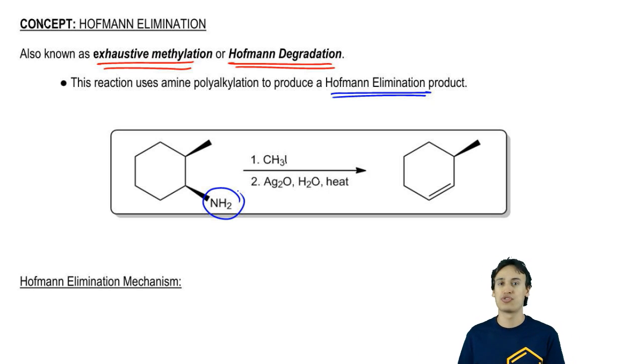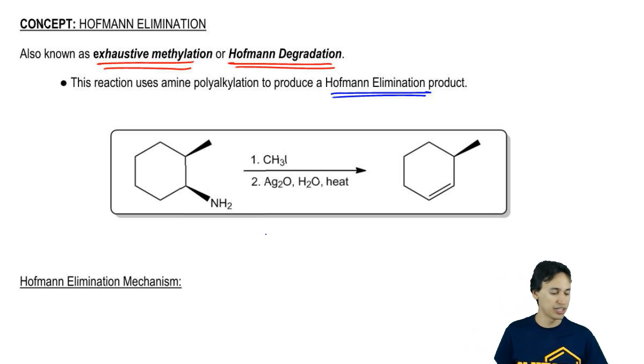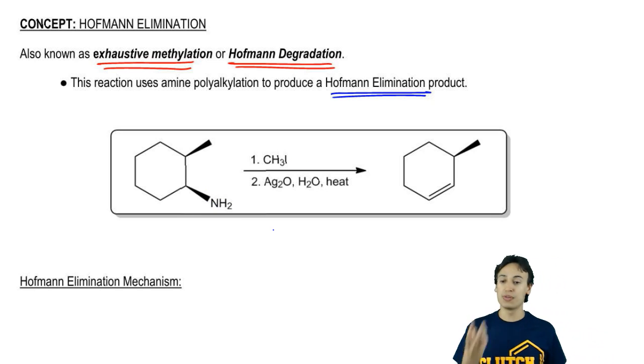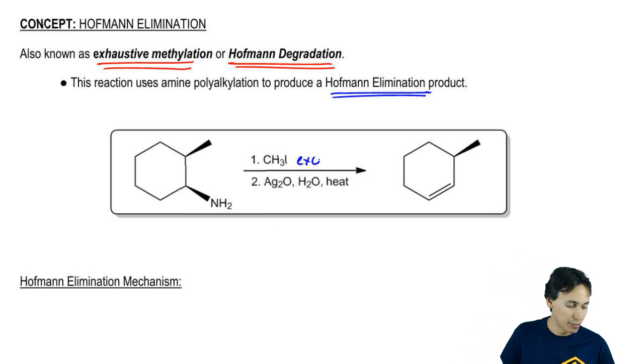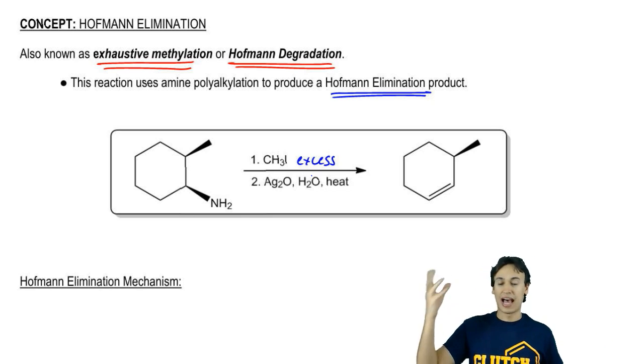The point of the first step of this reaction is going to be to try to make the nitrogen a good leaving group so then we can kick it out and do an elimination reaction with a base. That's exactly what the first step is. The first step is going to be some kind of alkyl halide, usually an alkyl iodide. You may see it written as in excess or you may not. In the absence of data telling you excess or a number of equivalents, always assume that there's excess.